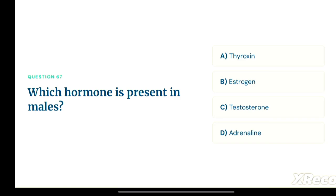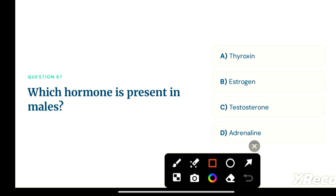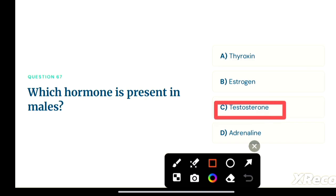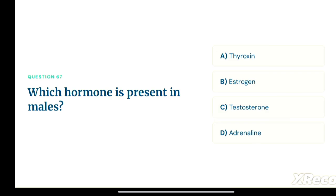Next question: which hormone is present in males? Option A: thyroxine, option B: estrogen, option C: testosterone, option D: adrenaline. The correct answer is option C, testosterone. Testosterone is the hormone present in males.